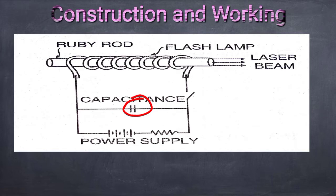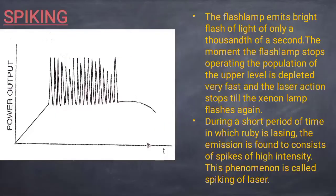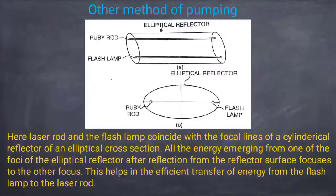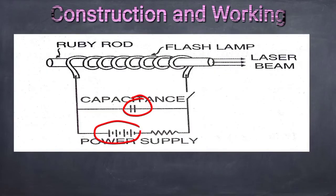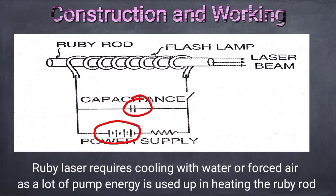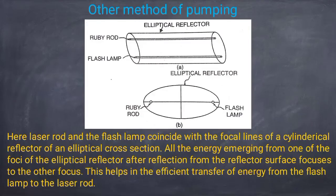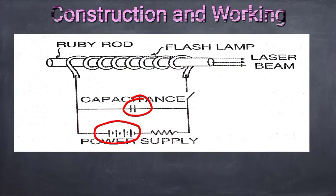The flash lamp operation leads to a pulsed output of the laser. In addition, the ruby laser requires cooling with water or forced air because a large amount of pump energy is used up in heating the ruby rod.